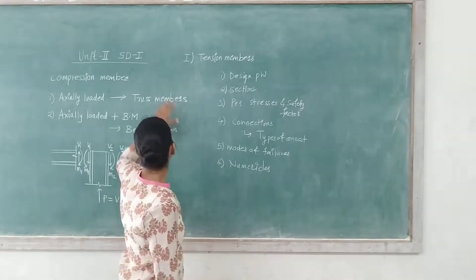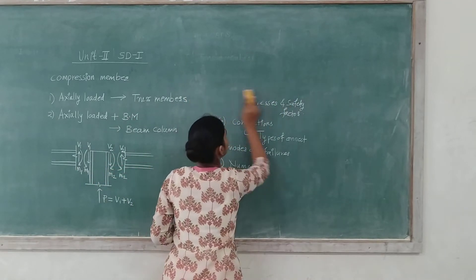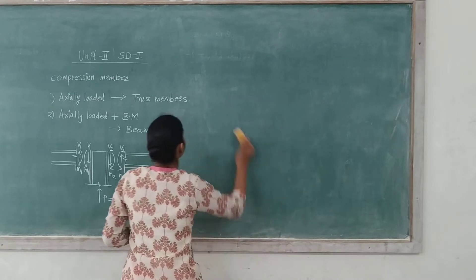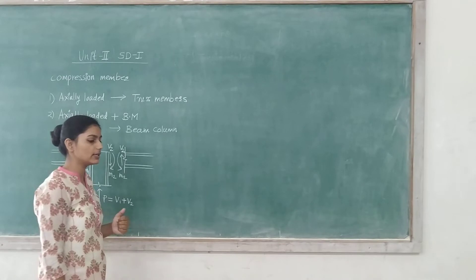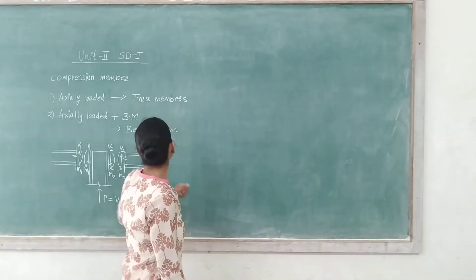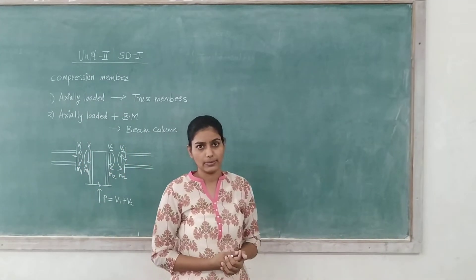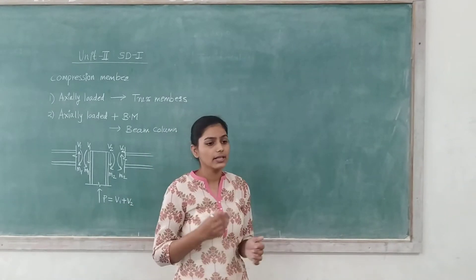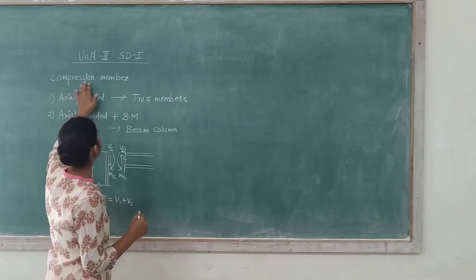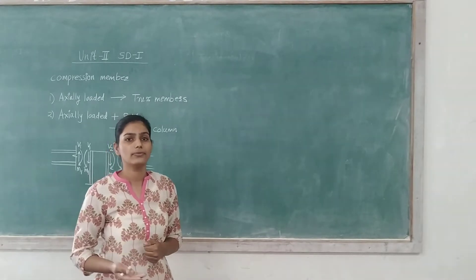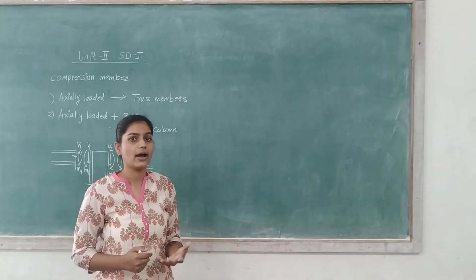Now I am going to focus on the compression member. In the compression member, what we are going to learn today, what we are looking into in this unit, is how to design a compression member. But for that we must understand what sections we use as a compression member, then how to classify those sections. Then we will look into the section properties, and then after all we will go for design. Then again there are some modes of failure in the compression member. We have to overcome them by designing it properly.